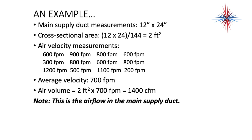Here's an example. Your main supply duct measures 12 by 24 inches — reasonable for a residential main supply duct. Multiply 12 by 24, then divide by 144 to get 2 square feet. You can't do this calculation in inches; you have to convert to square feet. We take multiple velocity measurements across the ductwork: 600, 300, 1200, 900, 800, 500, 800, 600, 1100, 600, 800, 200 FPM. You add those up and divide by the number of readings to get an average of 700 feet per minute. Multiply 2 square feet by 700 FPM to get 1,400 cubic feet per minute.